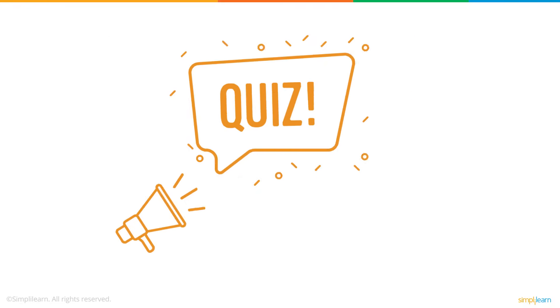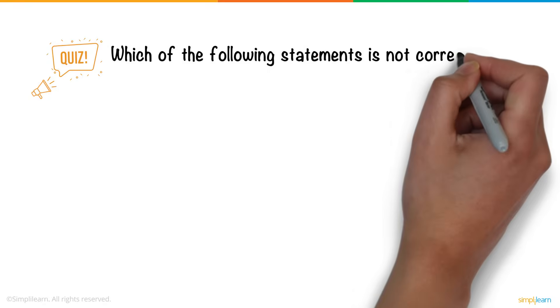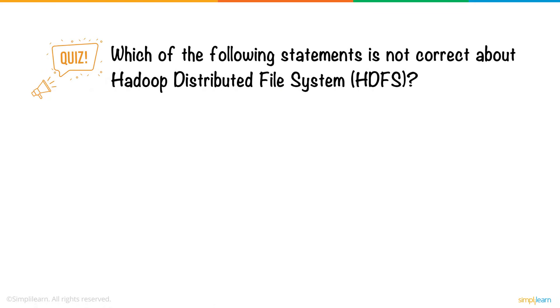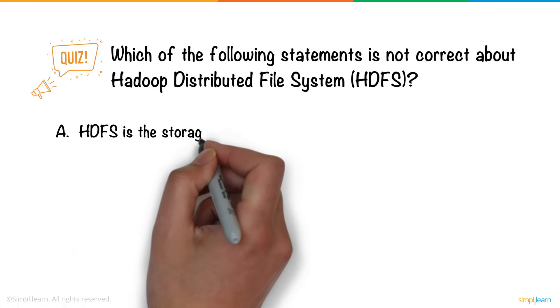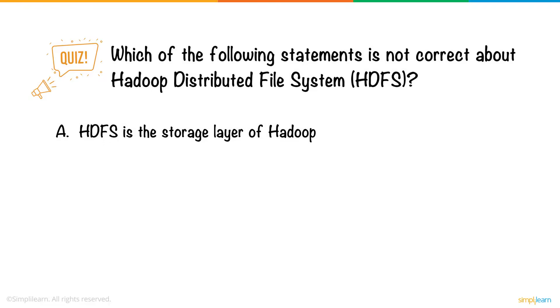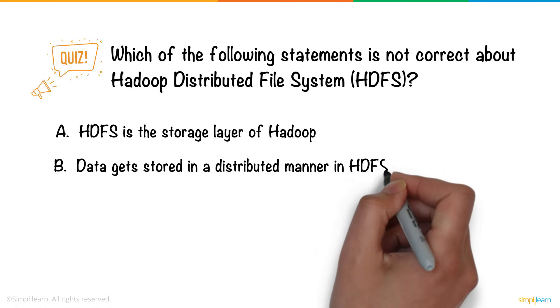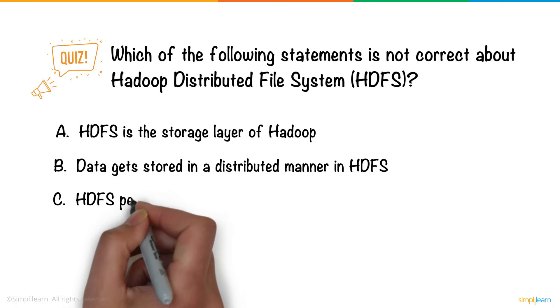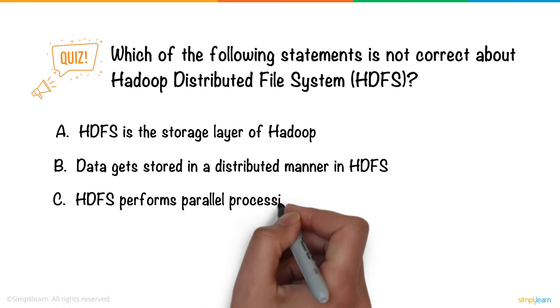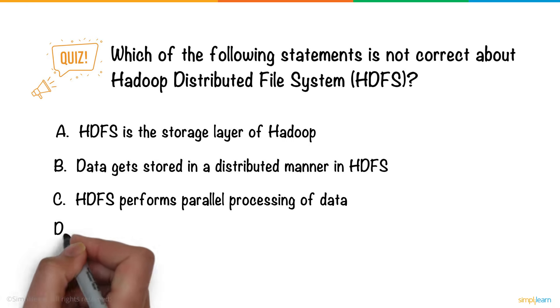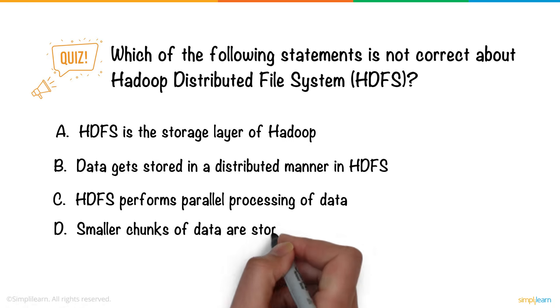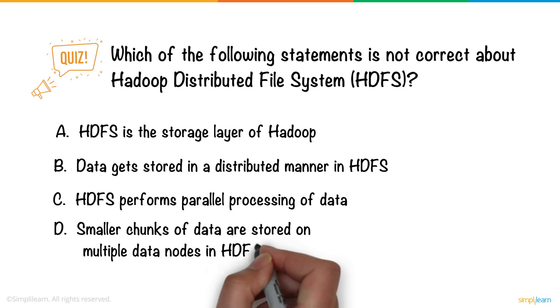So, here's a question for you. Which of the following statements is not correct about Hadoop Distributed File System, HDFS? A. HDFS is the storage layer of Hadoop. B. Data gets stored in a distributed manner in HDFS. C. HDFS performs parallel processing of data. D. Smaller chunks of data are stored on multiple data nodes in HDFS.